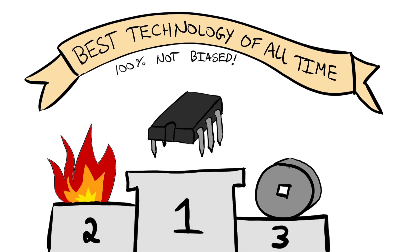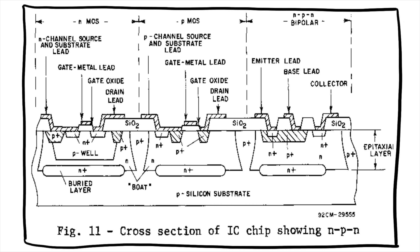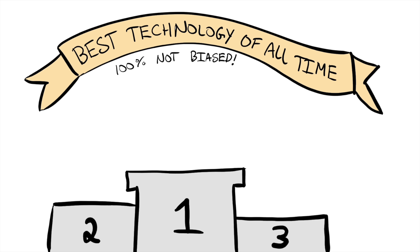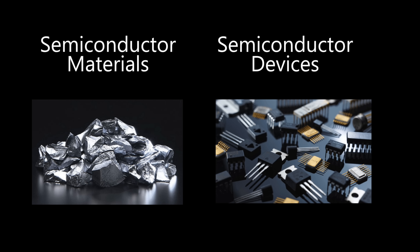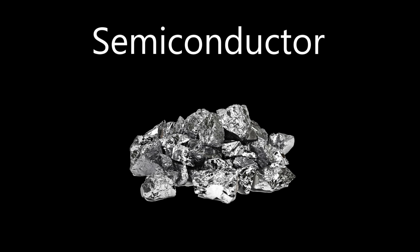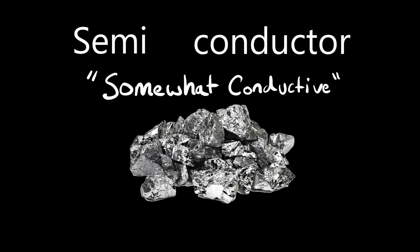Semiconductors are everywhere, but most people — even the engineers who design and build circuits — don't fully understand how the devices they use actually function. So let's start at the beginning. Whenever someone says the word semiconductor, they usually are talking about one of two distinct topics: either semiconductor materials or semiconductor devices. Semiconductor materials are crystalline solids such as germanium or silicon. Semiconductor devices are components such as diodes and transistors made from semiconductor materials.